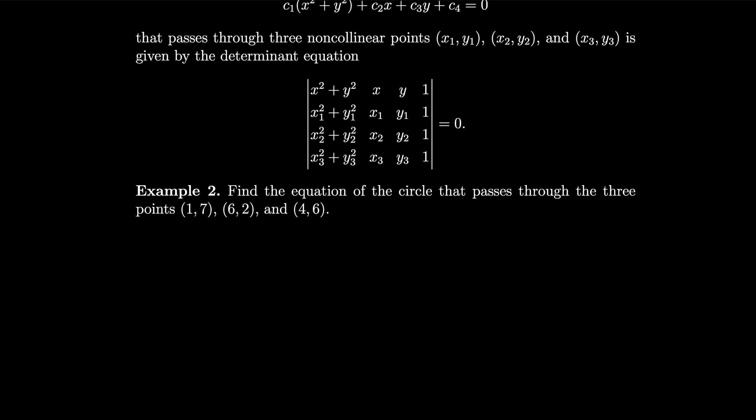Okay, so what we'll do is we will use this formula for the circle. We'll write x squared plus y squared, and we'll write x, y, and 1 for the general x and y. And then we'll do it for the first point, 1, 7. So 1 plus 7 squared is 49, so 50. And x is 1, y is 7, and we have 1. Then our next point is 6, 2. So we get 40, because 36 plus 4. And x is 6, y is 2. We keep the 1, and then the last point gives us 52 when we square them and add them. x is 4, y is 6, keep the 1. Take this determinant, set it equal to 0.